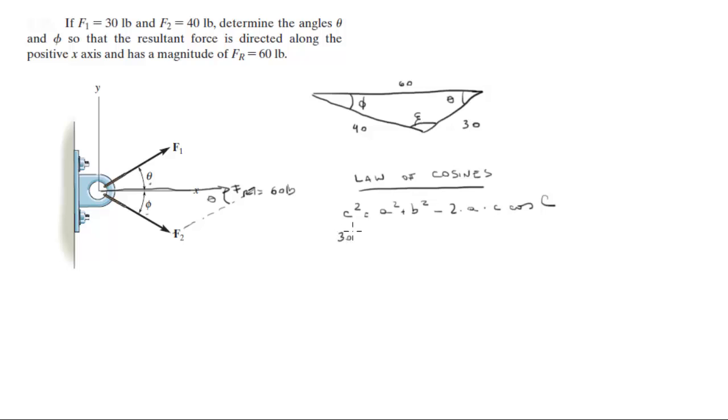In this case C will be phi and 30 will be... so when you plug the numbers in, 30 squared is equal to 40 squared plus 60 squared minus 2 times 40 times 60 cosine of phi. If you solve for phi, you're going to get that phi is equal to 26.38 degrees.